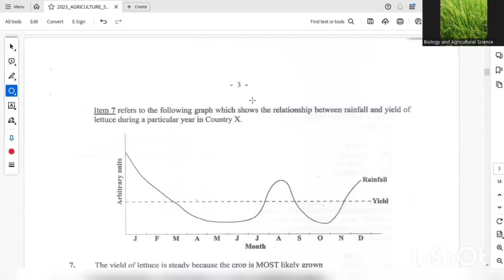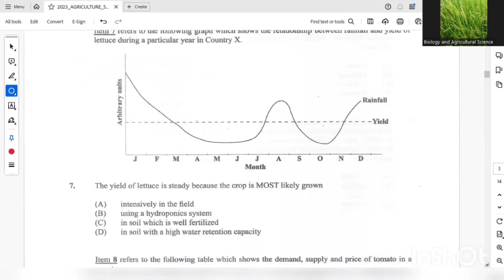Now we move on to question 7. So we have a graph here and we're seeing that rainfall during this period of time is increasing and decreasing. But while rainfall is increasing and decreasing, we see that the yield remains the same. So let's see the question. The yield of lettuce is steady, because the crop is most likely grown - the most suitable answer here would be B, using hydroponics system.